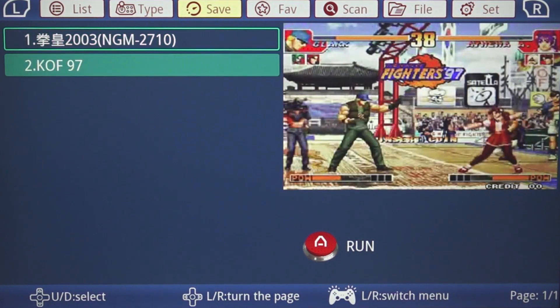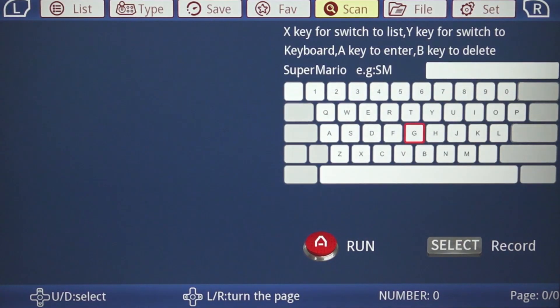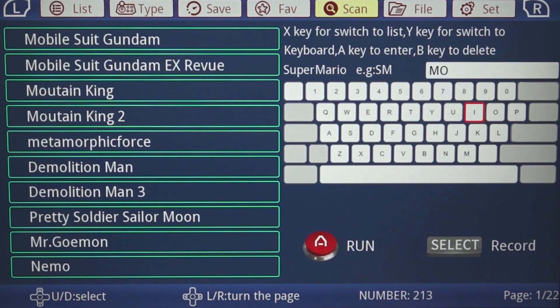Then we're going to get the save options, quite interesting that we have like a separate section for the saves. Then we're going to get favorites. Scanning, this means like basically you can search for a game, kind of weird saying like scanning.